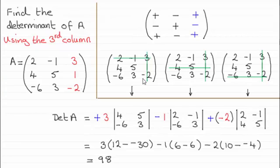So the determinant corresponding to the 3 is 4, 5, minus 6, 3. And the determinant corresponding with the 1 is 2, minus 1, minus 6, 3, and the determinant corresponding to the minus 2 is 2, minus 1, 4, 5.